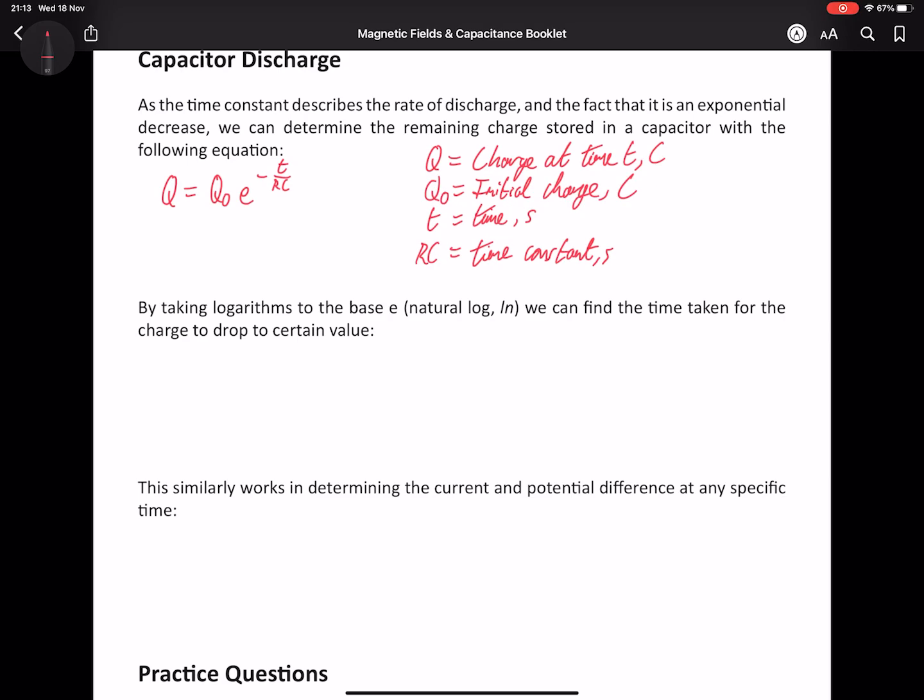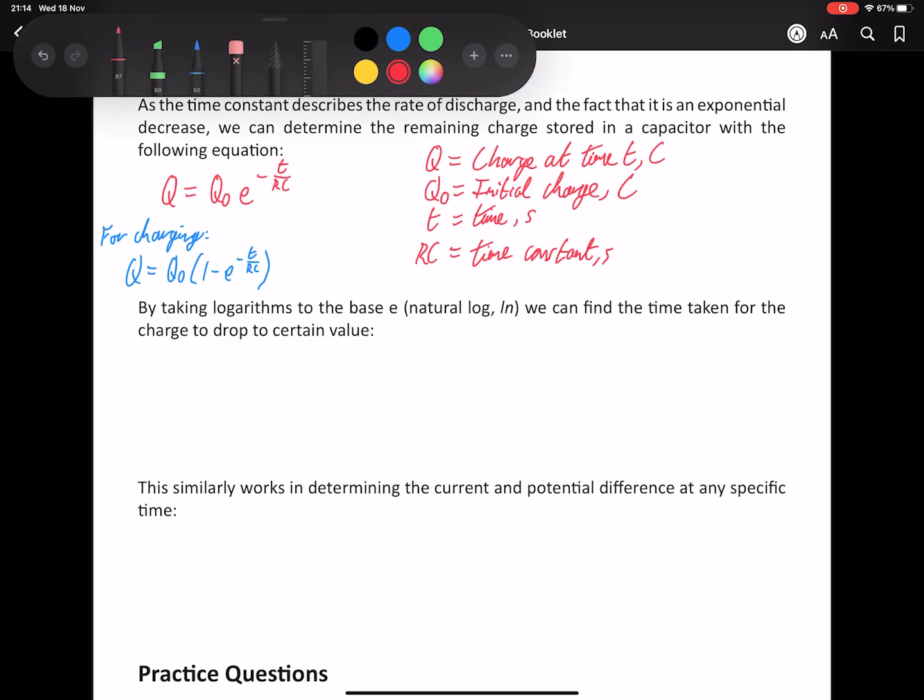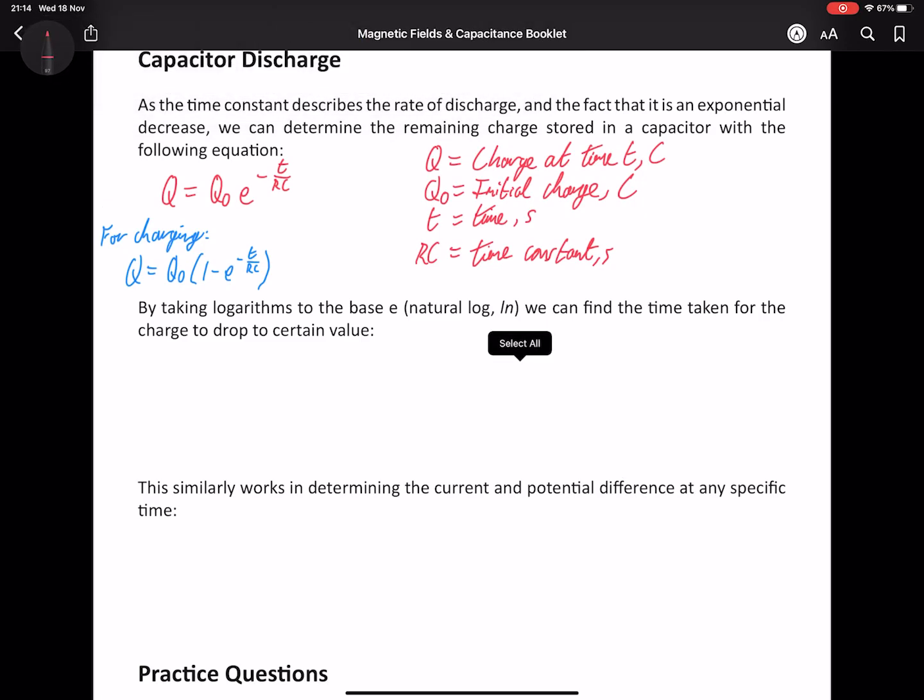You are also given an equation for the charging of a capacitor. It makes sense to think about that as the total charge minus the equivalent of the discharge, the amount of charge that hasn't yet happened. So this is given as Q equals Q0, and then in brackets, 1 minus E to the minus T over RC. So if we expanded these brackets, we would have Q0 minus the discharge equation. So it does make sense logically. It's just there to help support you if need be.